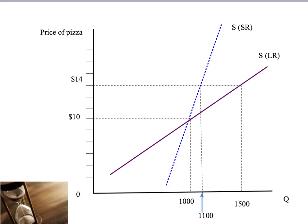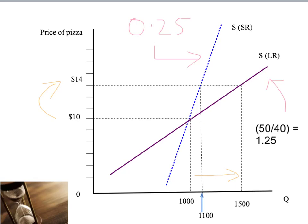So let's put some numbers on here. In the long run, the $4 or 40% increase in the price of pizza has led to an increase in the supply of pizza from 1,000 pizzas a day to 1,500 pizzas a day. So our long-run elasticity of supply is going to be 1.25 — greater than 1, meaning our supply in the long run is going to be elastic. Just as a reminder, the elasticity of our short-run supply curve was only 0.25, which was inelastic. The percentage change in quantity was less than the percentage change in price in the short run, but the percentage change in quantity is bigger than our percentage change in price in the long run, reflecting that quantity is more sensitive to changes in price in the long run.